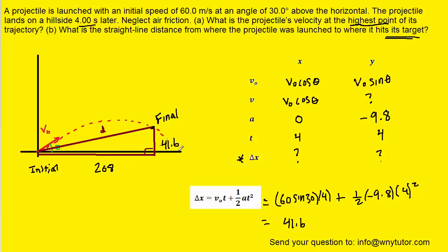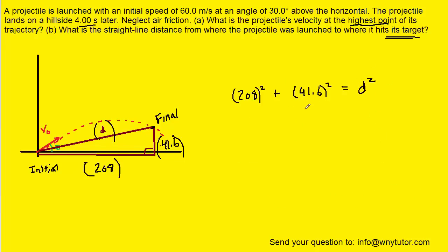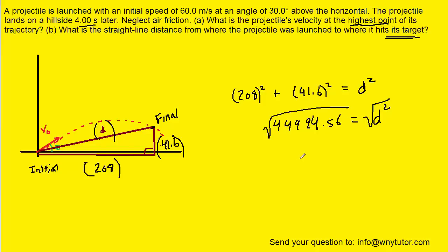Now we're ready to use the Pythagorean theorem, since we have a right triangle. We compute a² + b² = d², filling in Δx = 208 and Δy = 41.6. Adding the squared terms gives us a value, and taking the square root of both sides, we get roughly 212 meters. That's the correct answer to part B.